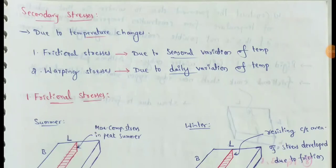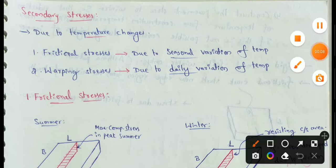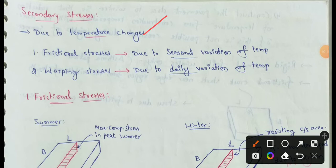Next topic: Rigid Pavements, Secondary Stresses. Due to temperature changes, we will get secondary stresses. In secondary stresses, we will choose two types: first one is Frictional Stresses, second one is Warping Stresses.